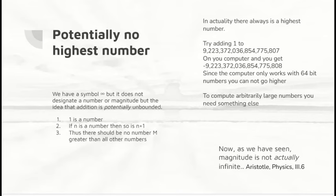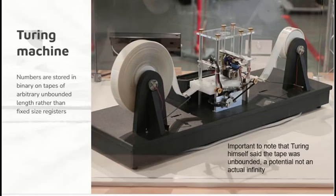To compute arbitrarily large numbers, as implied by the ability to add 1 to numbers indefinitely, you need something else. You need the Turing machine. It is a computer designed or proposed by Turing in the 1930s as a way of doing arbitrary precision arithmetic. Numbers are stored in binary on tapes which are of arbitrary unbounded length rather than fixed size registers.